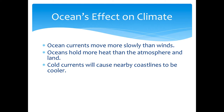Cold currents cause nearby coastlines to be cooler; warm currents cause nearby coastlines to be warmer. Cities located near the coastline typically have more moisture in the air because of the nearby ocean. Because of that moisture, temperatures — whether cooler or warmer — won't typically change as drastically as places that are drier or inland, because that moisture in the air takes longer to cool off and warm up.